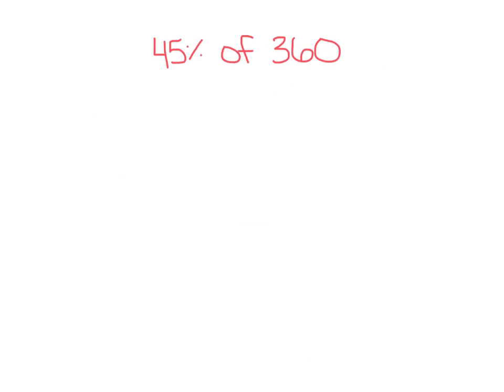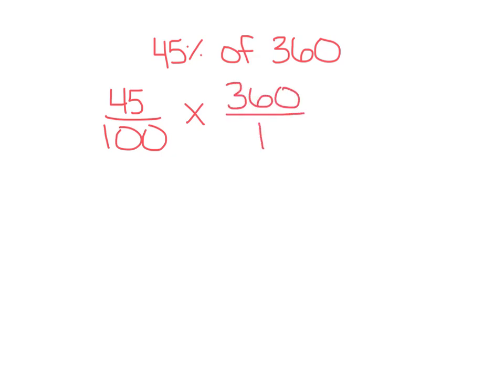Let's do one more example together before we practice on our own. So 45% of 360. First we want to rewrite our percent as a fraction — so 45 over 100, since percents are always out of 100. 'Of' means multiplication, and then 360 over 1 since it's a whole number. Check to see if you can cross simplify — we can. We can divide both 100 and 360 by 20: 100 divided by 20 is 5, and 360 divided by 20 is 18.